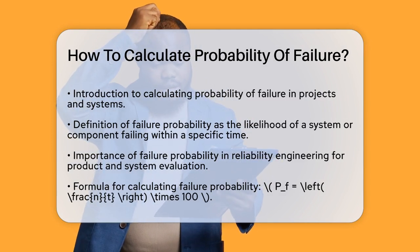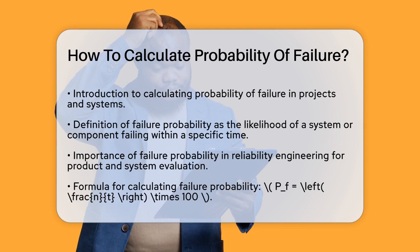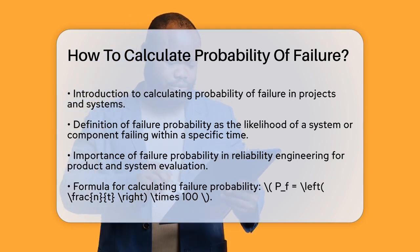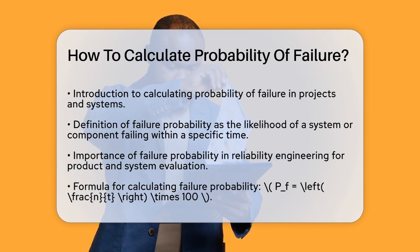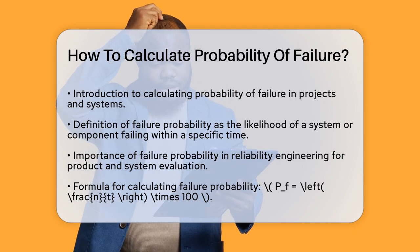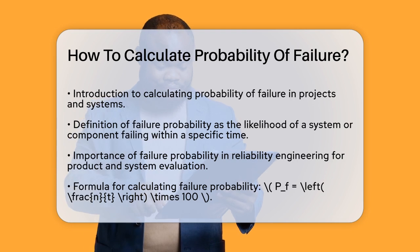Understanding this concept is crucial for assessing the reliability and safety of your systems. To start, let's define what failure probability is. It's a measure of the likelihood that a system or component will fail within a specified time period. This is often used in reliability engineering to evaluate the performance of products and systems.